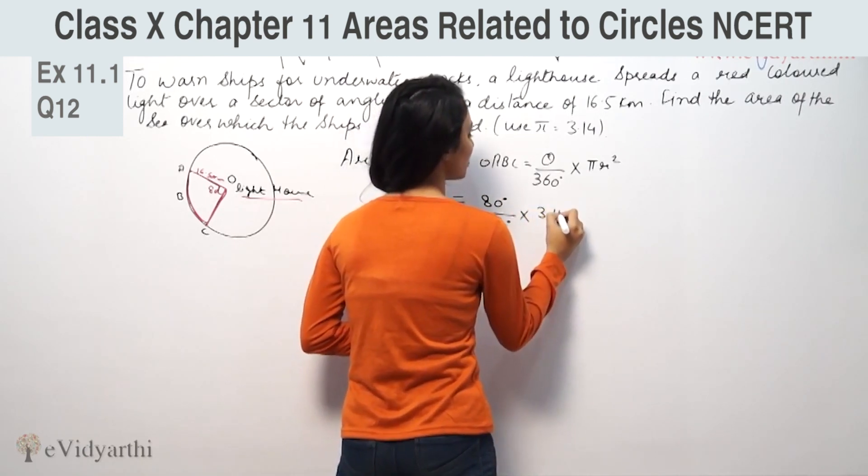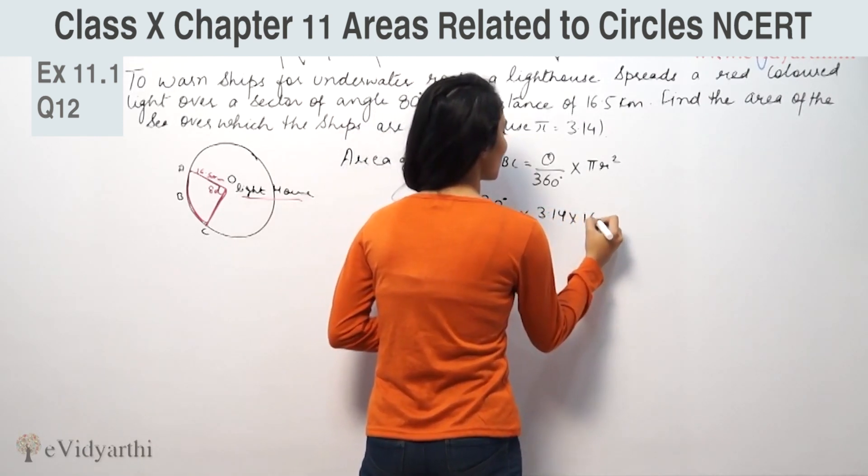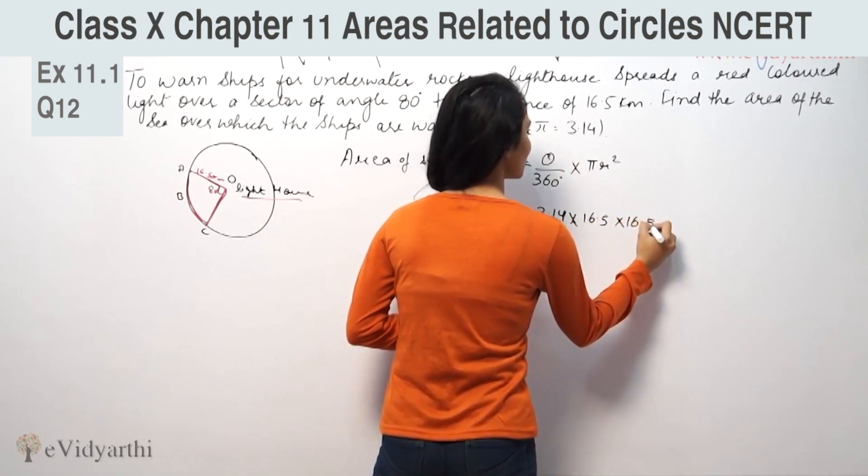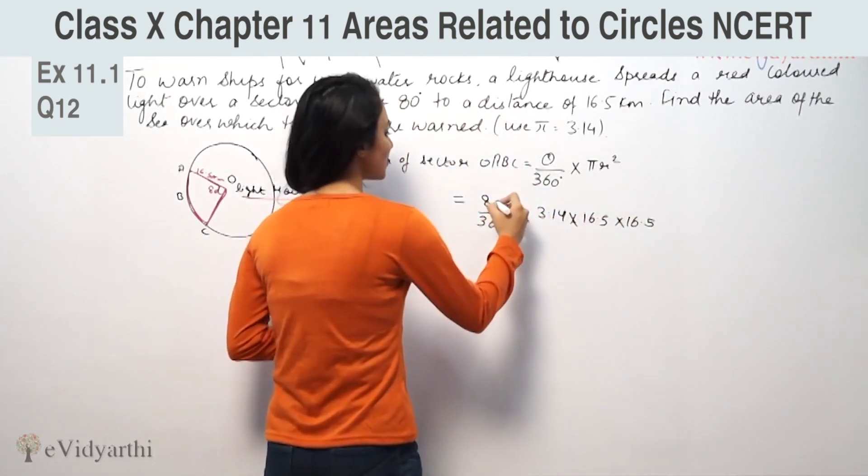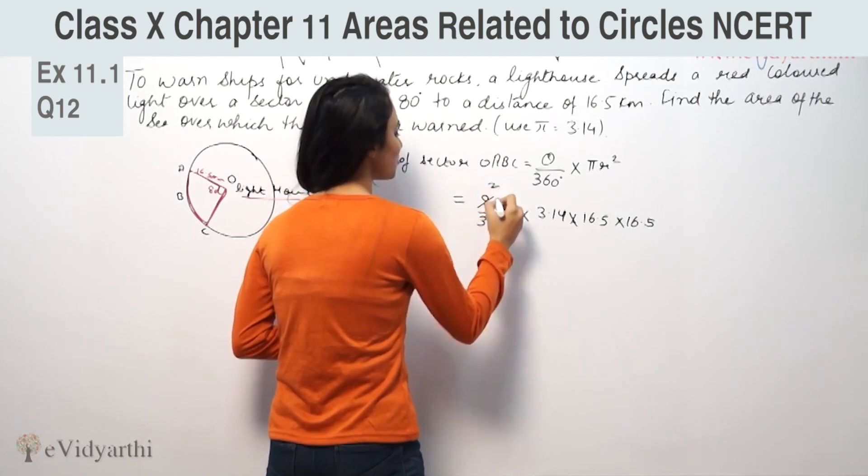The value of pi is 3.14. R squared is 16.5 into 16.5. 80 divided by 360 - 0 is cancelled, 4 by 2 is 2, and 4 by 9 remains.